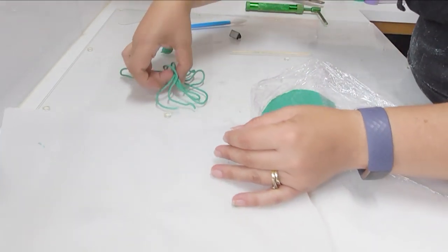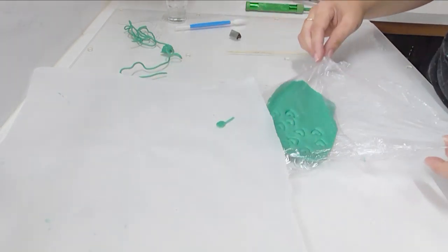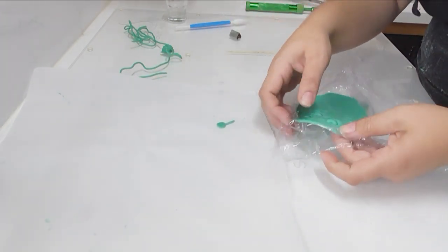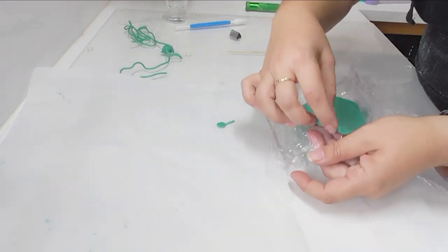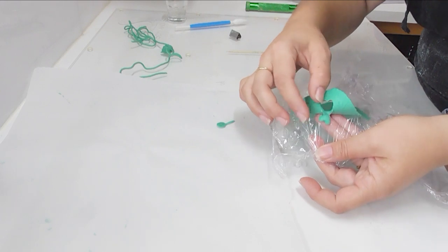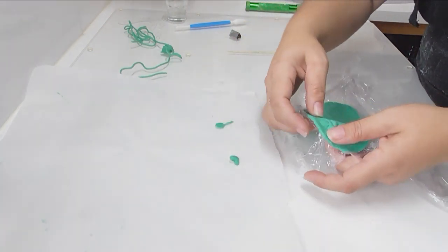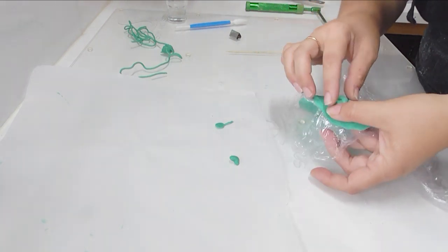I'm just going to pull in some greaseproof paper here to pop that on so it doesn't stick to my workbench and then what I'm going to do is just very gently peel this excess soap dough away from the hearts that we cut and I'm going to take all of these little hearts out of this soap dough.